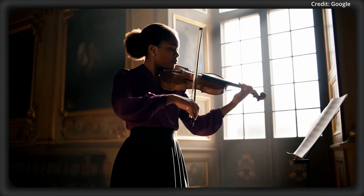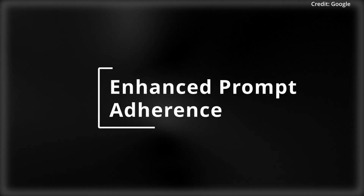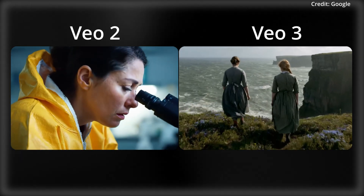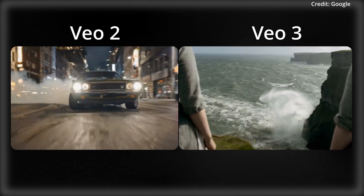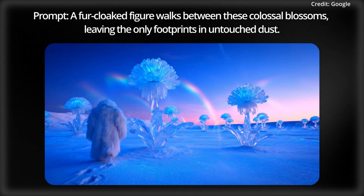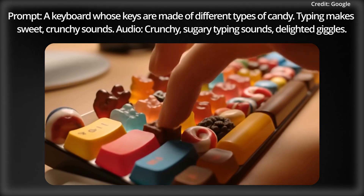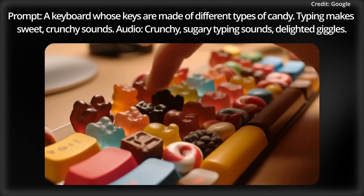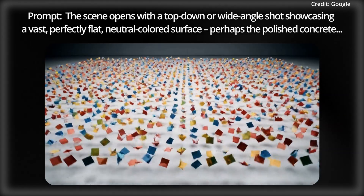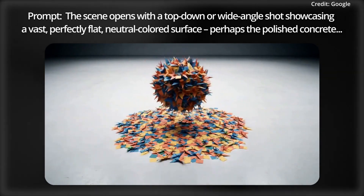VO3 ups the ante not just with audio but also with video, thanks to its enhanced prompt adherence. VO3 improves on VO2 by interpreting complex text or image instructions with next-level accuracy, allowing it to follow extremely detailed prompts, which unlocks the ability to generate videos with sequential actions and consistent details. Specifically, VO3's adherence to input prompts uses Google's natural language processing and scene understanding to create visuals that most closely match the user's intent, as demonstrated in the following examples.